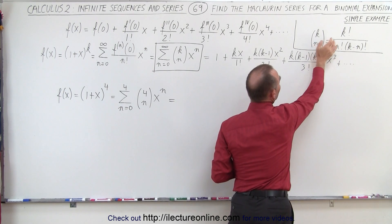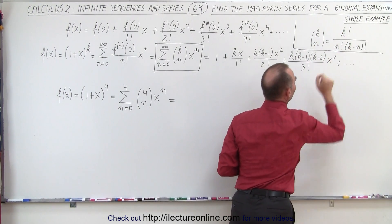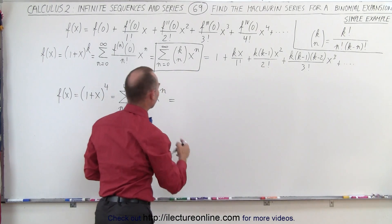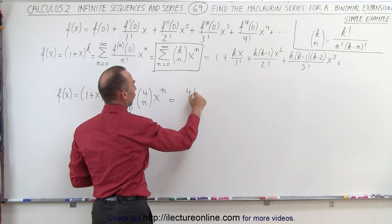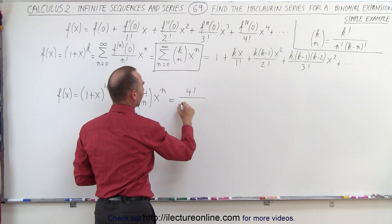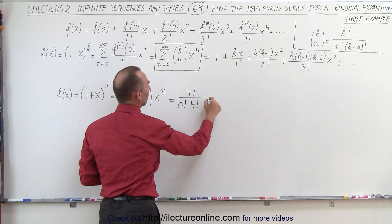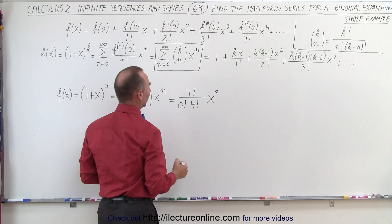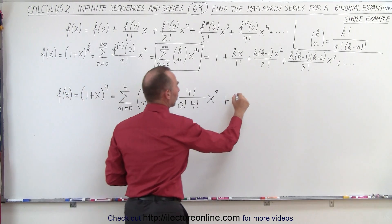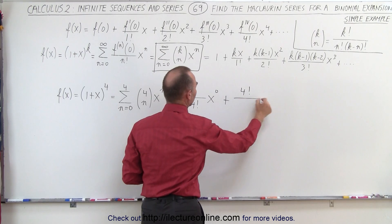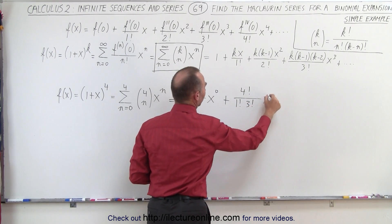k over n in parentheses means k factorial divided by n factorial divided by (k-n) factorial. So on the first term, when n is equal to 0, we have 4 factorial in the numerator divided by 0 factorial n times 4 factorial in the denominator times x to the 0 power, plus the next term, now n is going to be equal to 1. We still get 4 factorial in the numerator divided by 1 factorial 3 factorial times x to the 1st power.